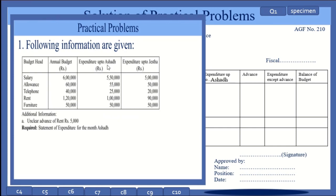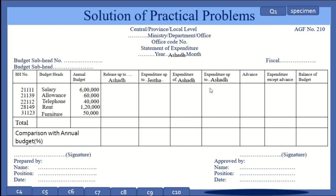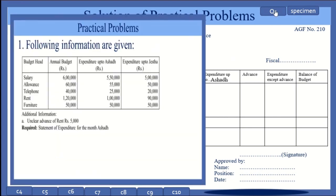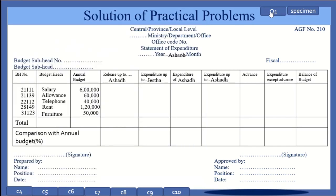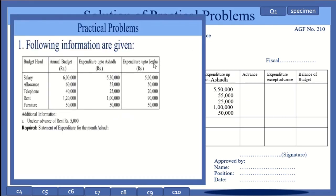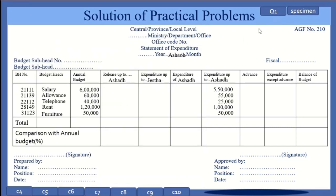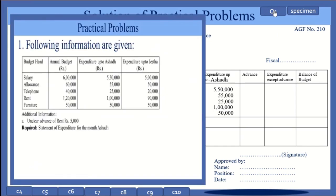Moving to another column — expenditure up to Ashar is given in the question, so we write that amount in column number 7. Expenditure up to Ashar: 5 lakh 50,000, then 55,000, then 25,000, 1 lakh, and 50,000. These are the major pieces of information provided and we have already written them into AGF number 210.